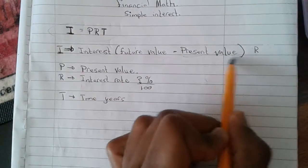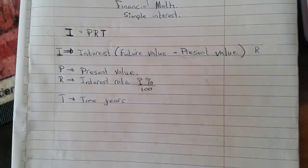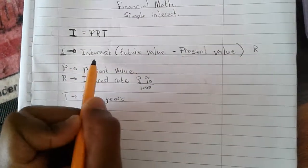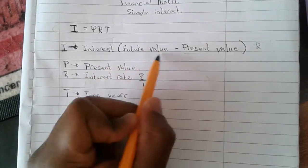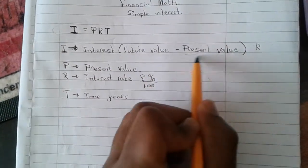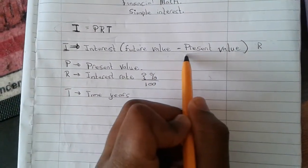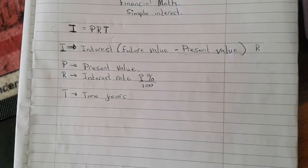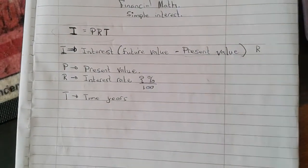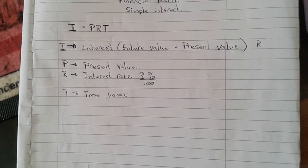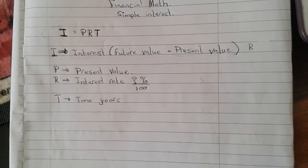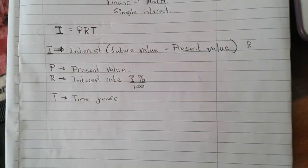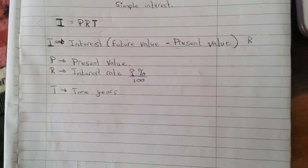Be careful when placing the future value and the present value, because it can be very tricky. Your interest is where you subtract your present value from your future value. Please make sure you understand these different amounts of money, because you can get it wrong if you put them in the wrong places.